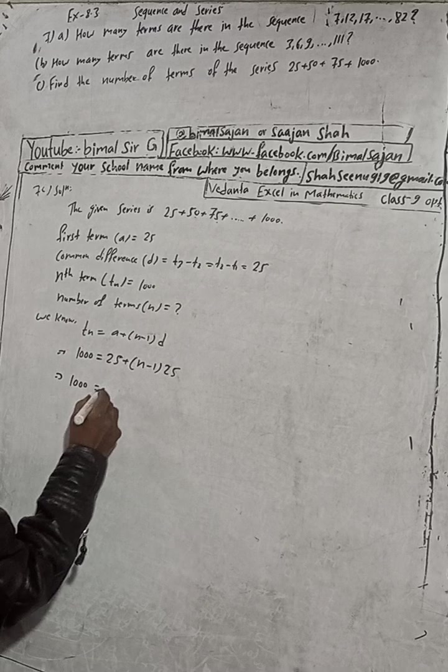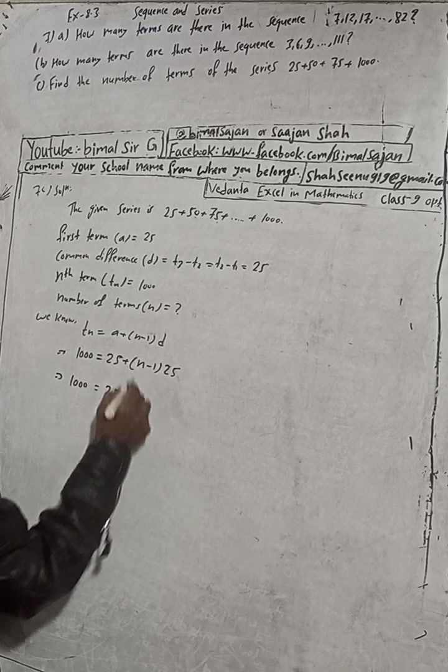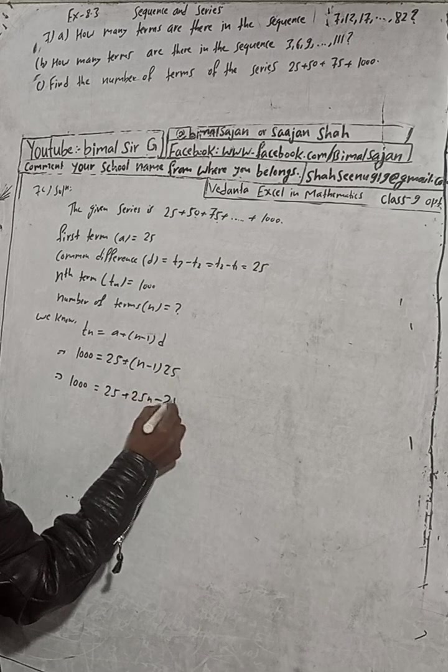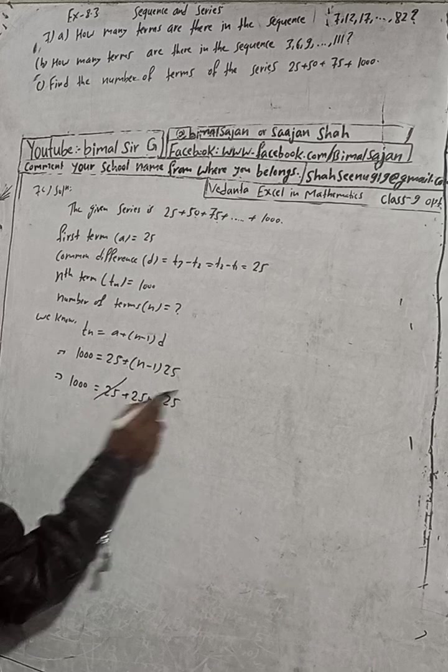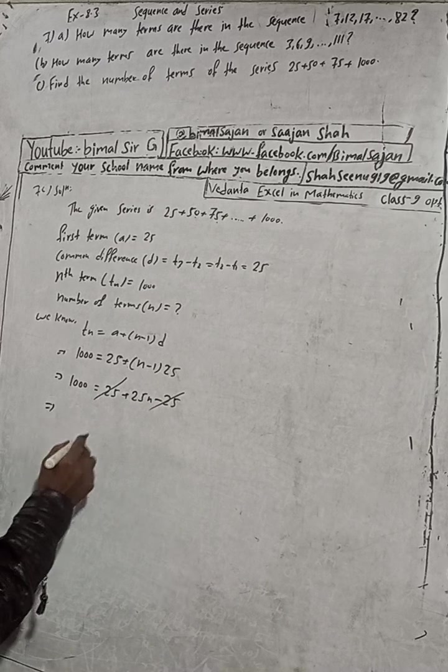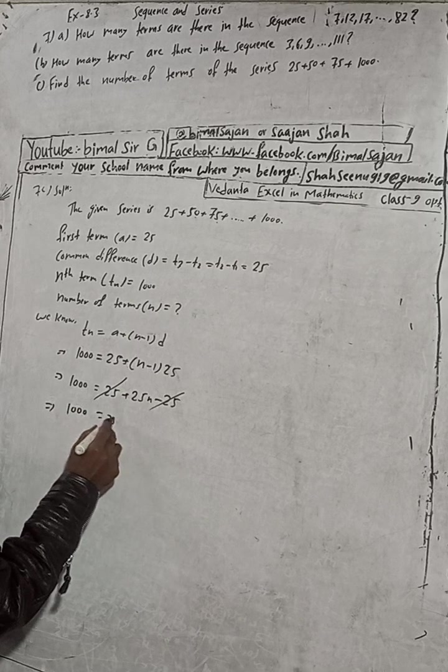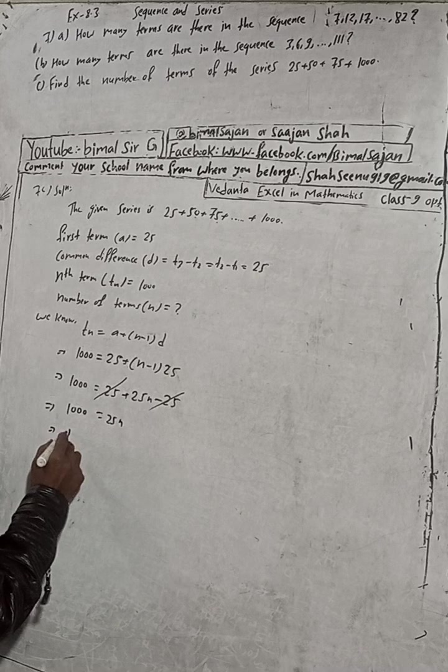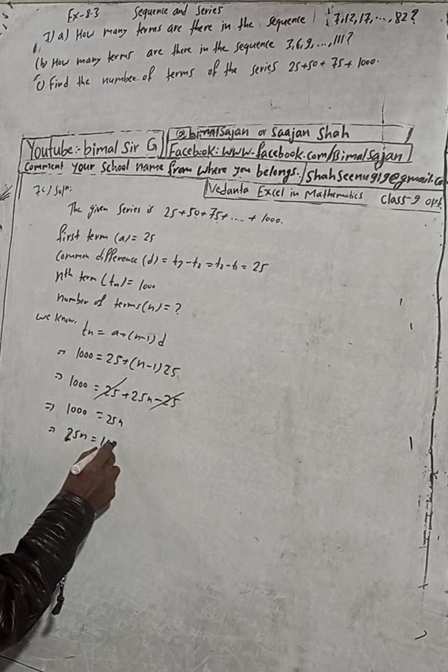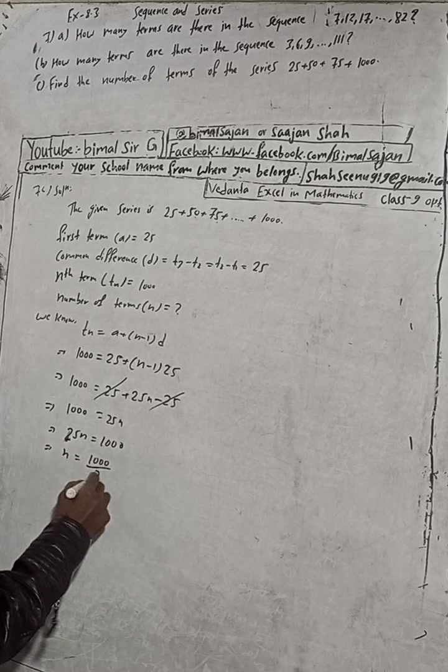Now this plus 25 minus 25 cancel. So 1000 is equal to 25n. We put 25n this side. This implies n is equal to 1000 divided by 25.